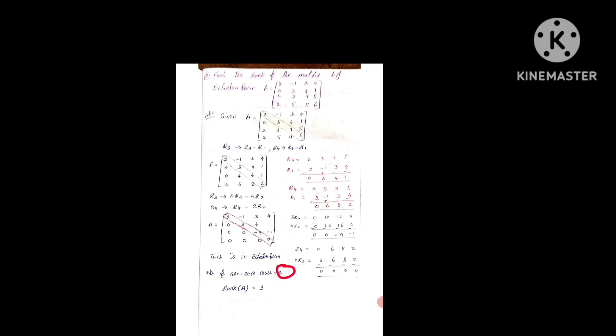We can decide here — check now the number of non-zero rows: 1, 2, 3. The fourth row is totally zero, so we should not count it. Number of non-zero rows is 3, so the rank of the matrix is 3.